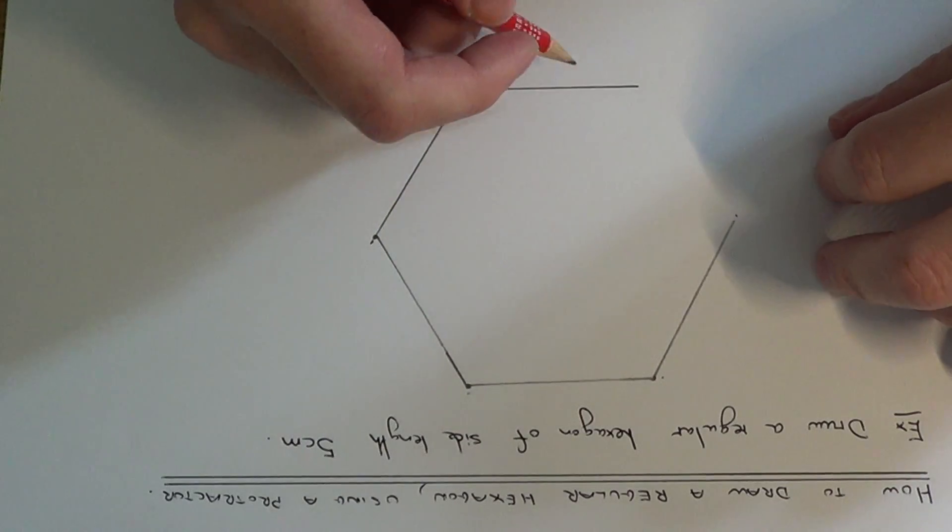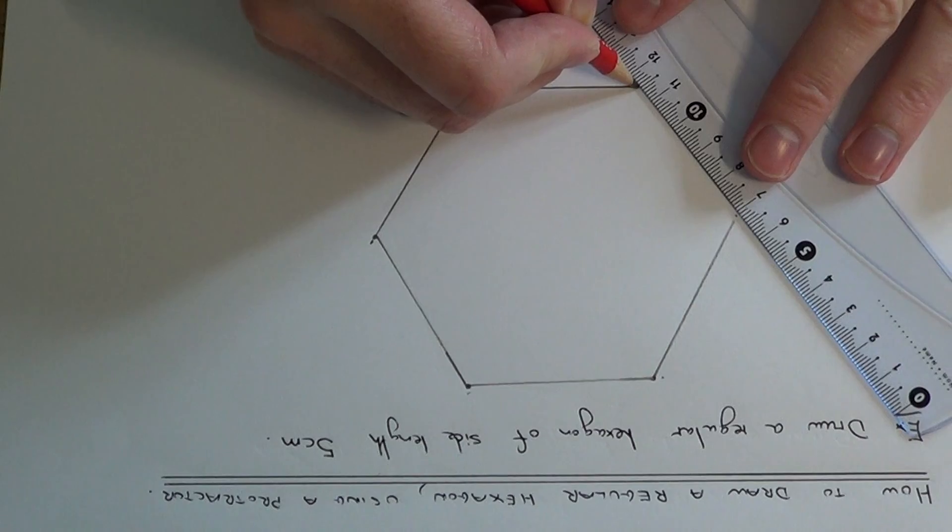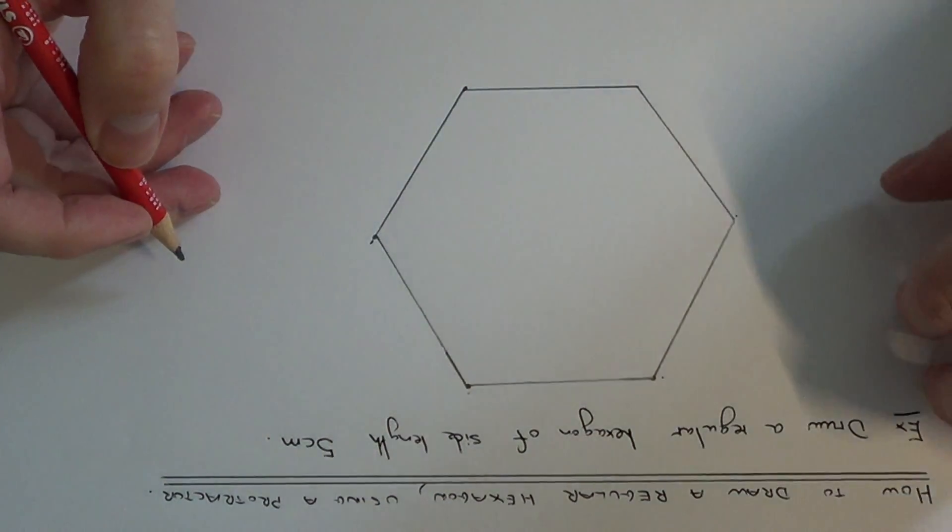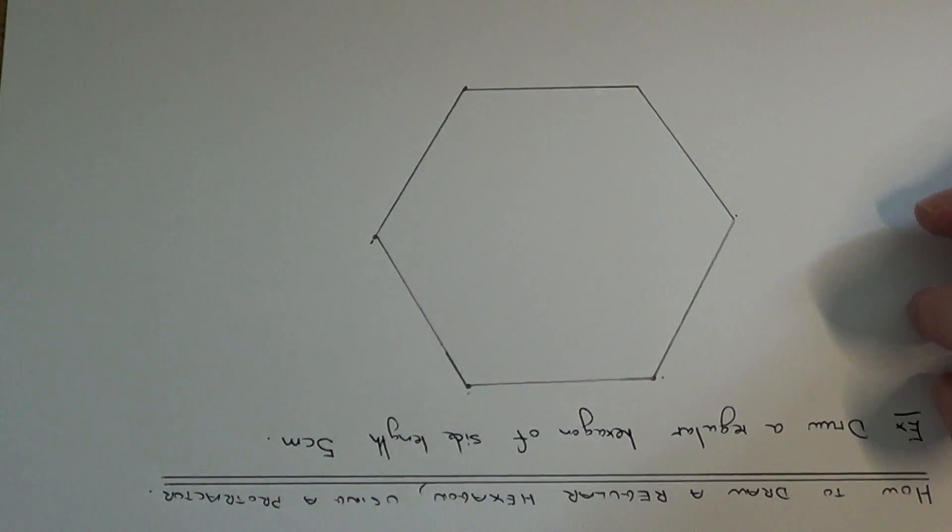And there won't be any need to measure the last side because it should be 120 degrees. And there we have it. You've got your regular hexagon there. All the sides are 5cm long and all the angles are 120 degrees.